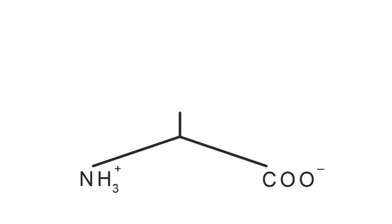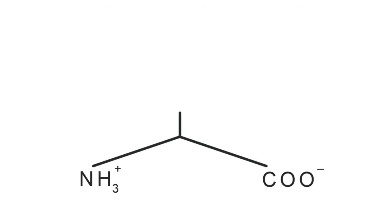Tyrosine is another one to memorize. Its single-letter abbreviation is Y, which you can't really work in mnemonically. But all you need to remember is that tyrosine is a hydroxylated phenylalanine. So we draw our phenyl group and add a hydroxy group at the para position. That is tyrosine — you know alanine, you can build phenylalanine, and tyrosine is just phenylalanine with a hydroxy group.